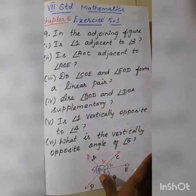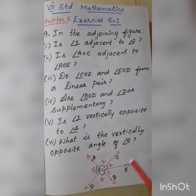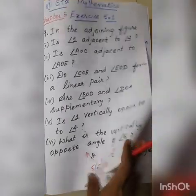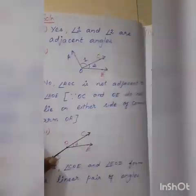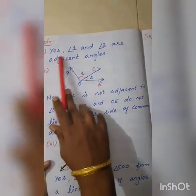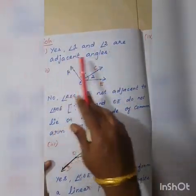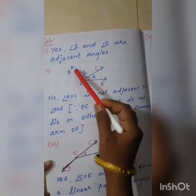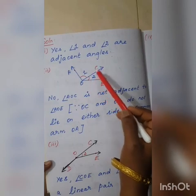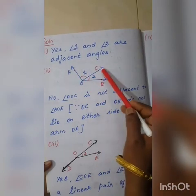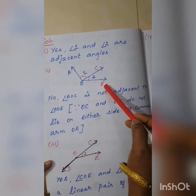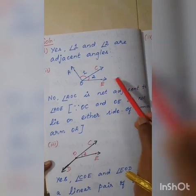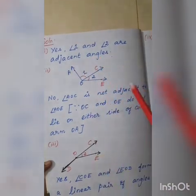For the second question: angle AOC adjacent to angle AOE. The first question answer is yes — angle 1 and angle 2 are adjacent angles. This is angle 1, this is angle 2. OC is the common arm. OA and OE are the non-common arms. The common arm is on either side of the non-common arms. So it is an adjacent angle. That is the first question answer.